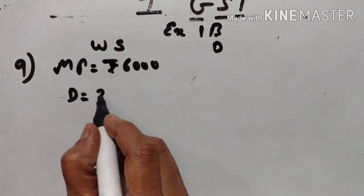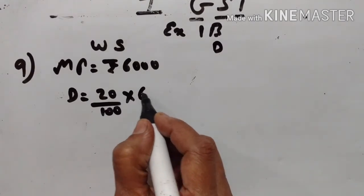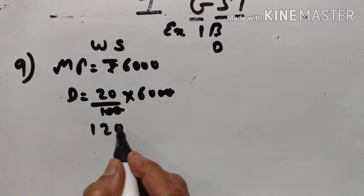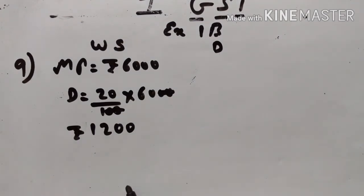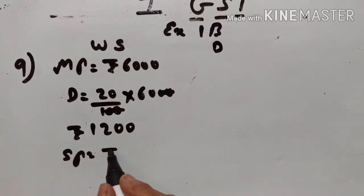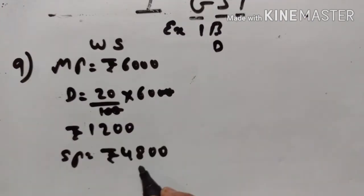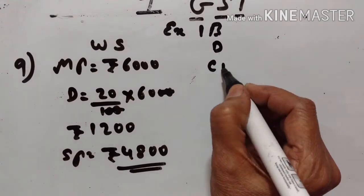Discount is equal to 20% of Rs.6000, which is Rs.1200. So the selling price will be Rs.6000 minus Rs.1200, which is equal to Rs.4800. Rs.4800 is the cost price for the dealer.